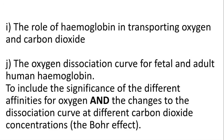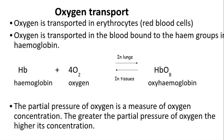Welcome biologists. This session we're going to take a look at how oxygen and carbon dioxide are transported around the body. This covers the Bohr effect and fetal haemoglobin. Haemoglobin binds to oxygen in the lungs to form oxyhaemoglobin, and oxyhaemoglobin will dissociate in tissues to form oxygen and haemoglobin again. The oxygen is then used in aerobic respiration in the respiring tissues to create ATP.